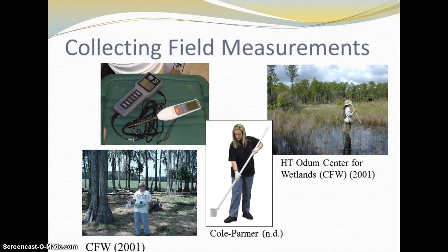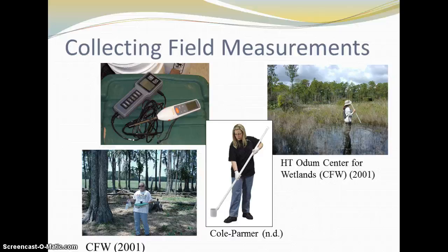When collecting field measurements, special care is needed to ensure the accuracy of the field equipment. For example, when using a pH meter to collect pH, or other meters for temperature, conductivity, or dissolved oxygen measures, make sure the probes are calibrated. Specifically for dissolved oxygen, calibrate the meter the day of sampling using barometric pressure. For membrane probes, change membranes monthly.